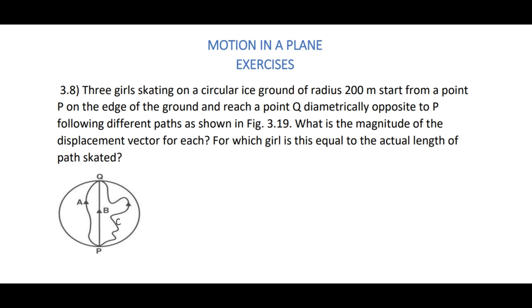Hello students, in this video we are going to discuss problems 3.8 and 3.9 as per the new textbook from Motion in a Plane. Three girls skating on a circular ice ground of radius 200 meters start from a point P on the edge of the ground and reach a point Q diametrically opposite to P.